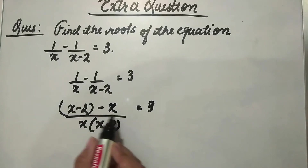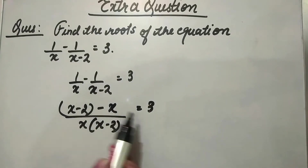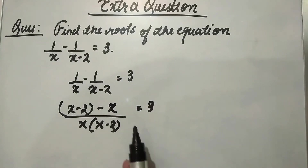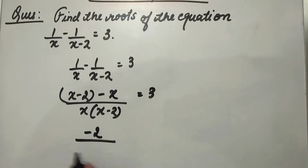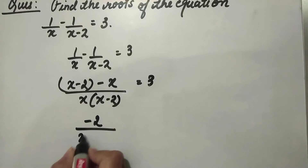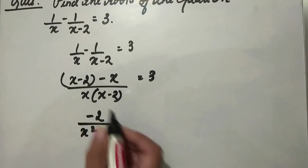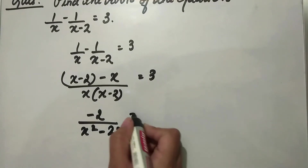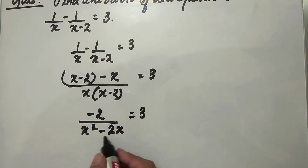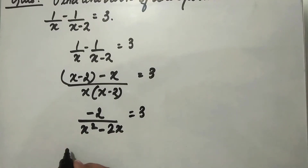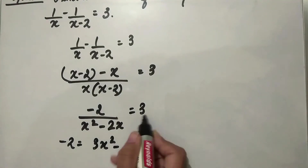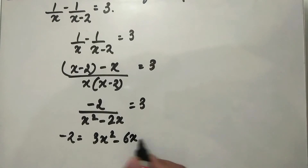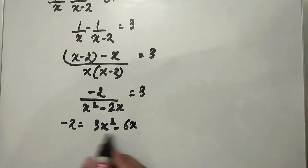This will be x minus 2 minus x; x minus x will be 0, so in the numerator it will be minus 2, upon x into x which gives x squared minus 2x, is equal to 3. By cross multiplication, minus 2 equals 3x squared minus 6x.